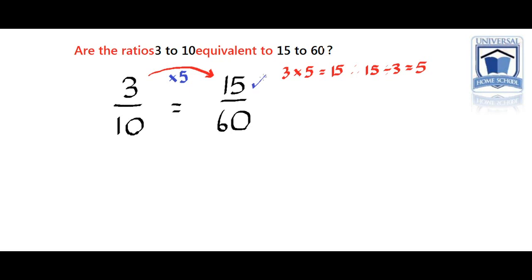Now, if we multiply the 10, the denominator, by 5, do we get 60? If we get 60, yes, it is equivalent. If not, then they're not equivalent. So 10 multiplied by 5 equals 50, which means these ratios are not equivalent.